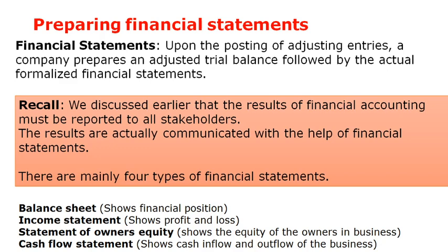To summarize: after the adjusted trial balance, we prepare financial statements. If someone asks how many financial statements there are, you can say it depends on the company — they can prepare as many as they want — but they will always prepare a minimum of five statements and communicate them to the general public: balance sheet, income statement, statement of owner equity, and statement of cash flow.